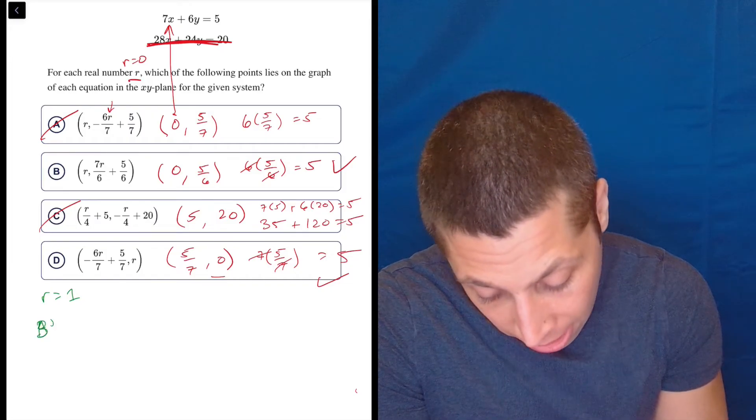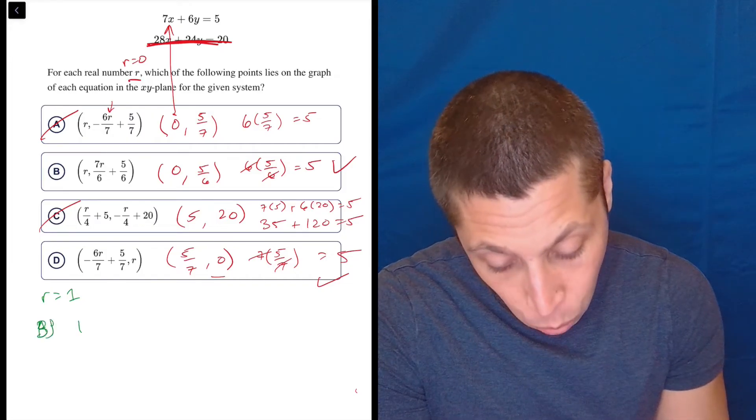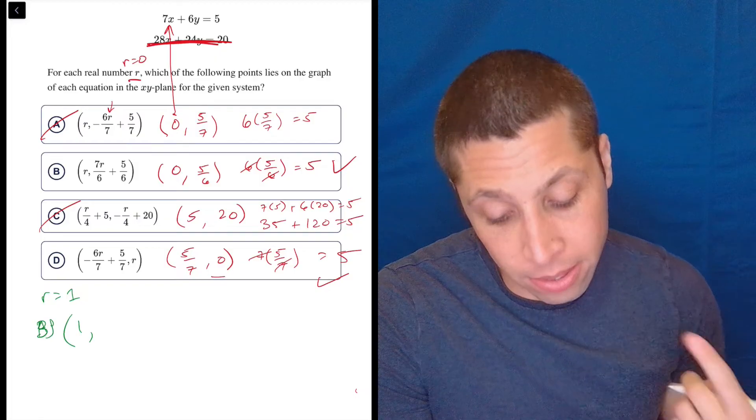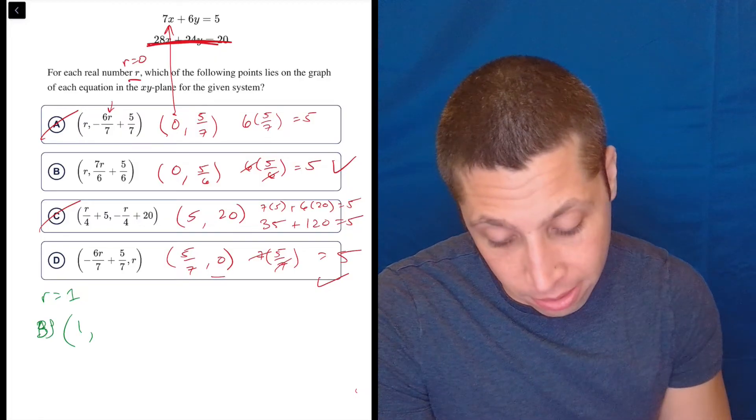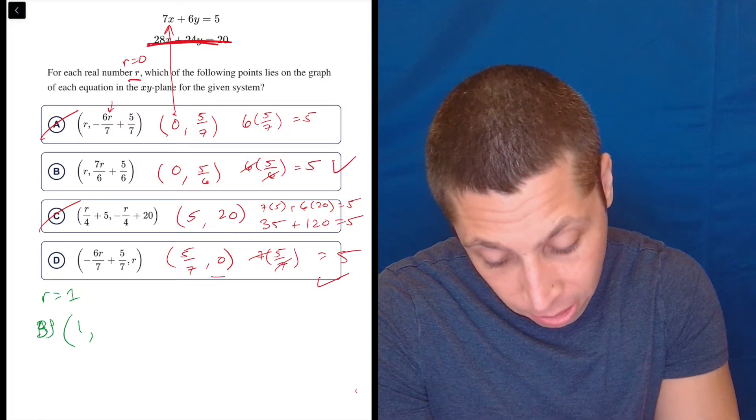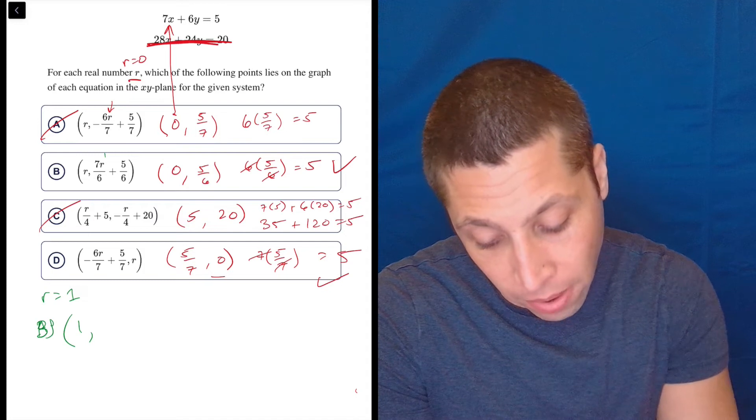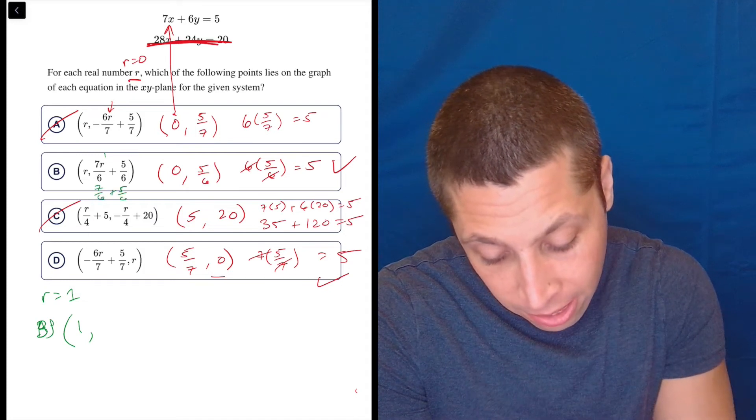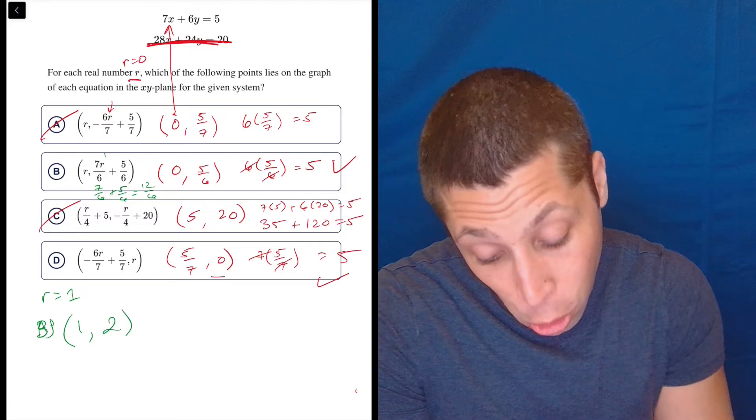Because for choice B, that just makes the point 1 comma 7/6 plus 5/6, because this is 7, so this is a 1. 7/6 plus 5/6 is 12/6, which is 2.